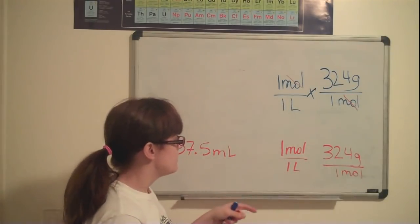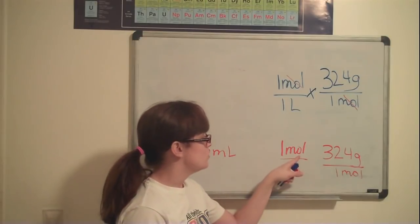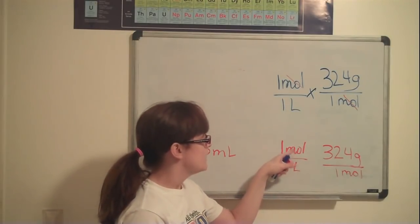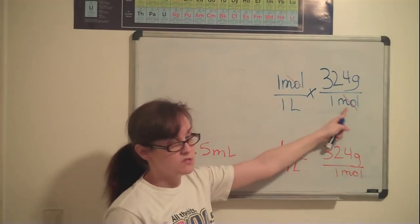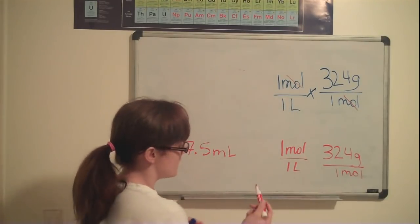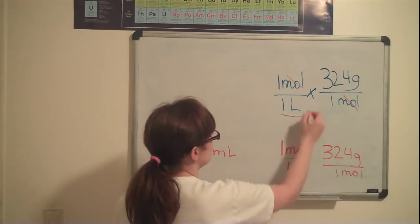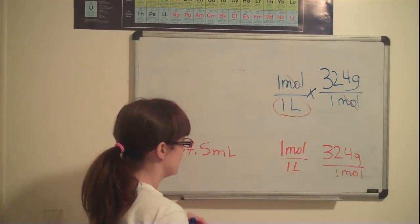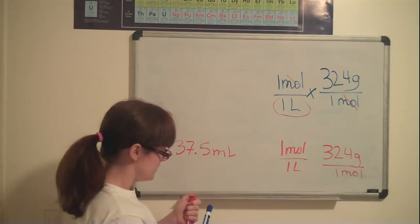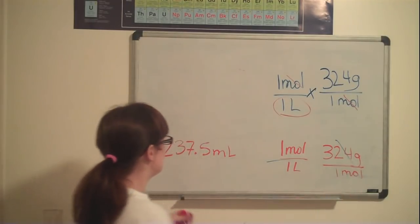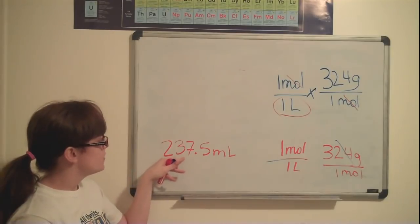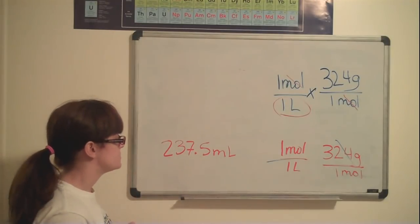The reason why I knew I needed to multiply by the molarity was that it was the only number that had moles in it, and I knew that the moles had to be on the top to cancel out the moles on the bottom. So now I have these units of liters I need to get rid of. And the number that I have left to work with is 237.5 milliliters.